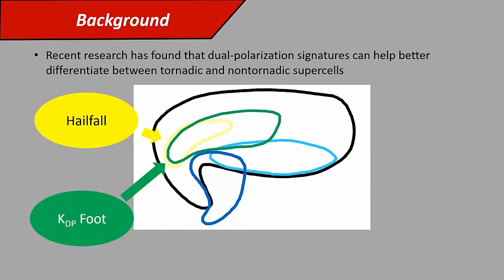The KDP foot is an area of high specific differential phase, or KDP, and that indicates you have really high liquid water content in that area, so very heavy precipitation. This is often found in the storm core, and it's potentially a proxy for the downdraft location in some instances.